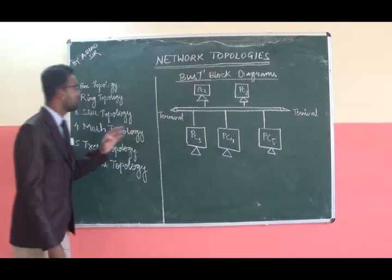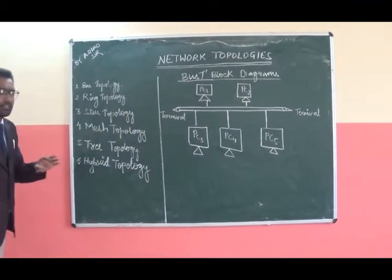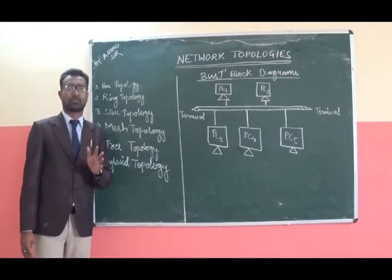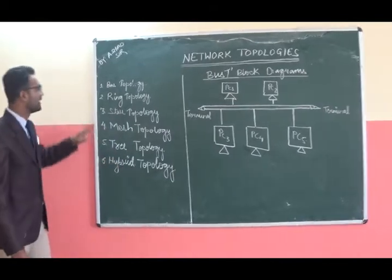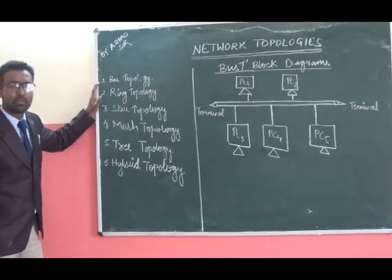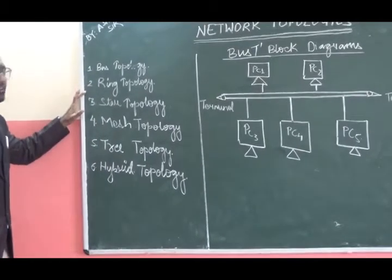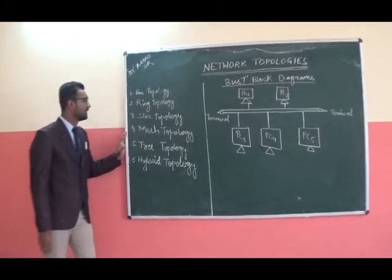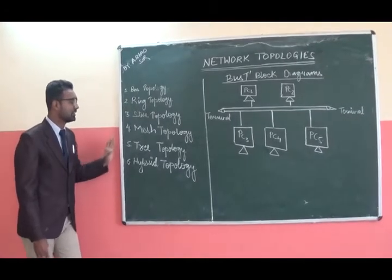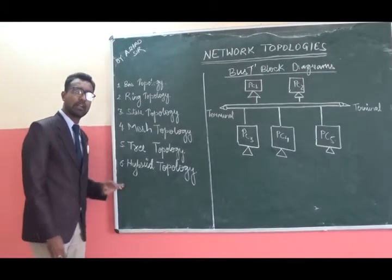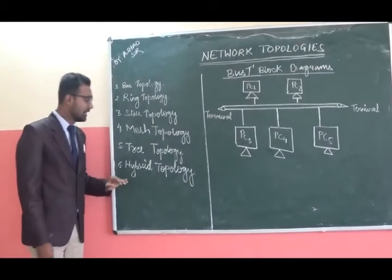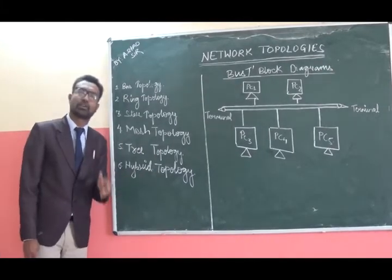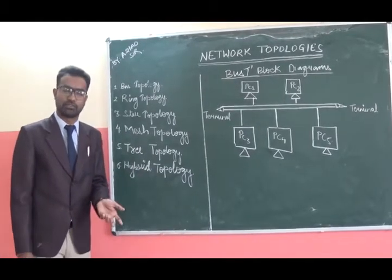So there are 6 types of different network topologies: bus topology, ring topology, star topology, mesh, tree, and hybrid. Hybrid is the combination of any 2 or 3 topologies.